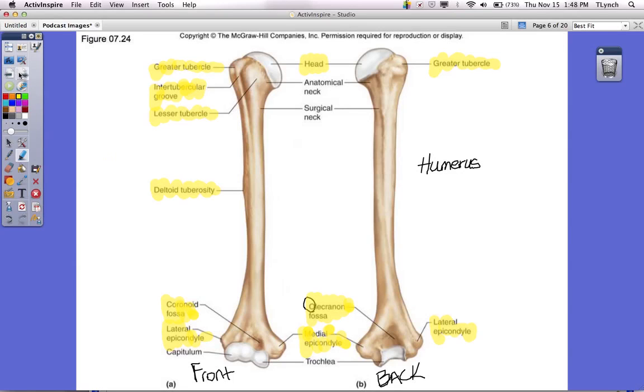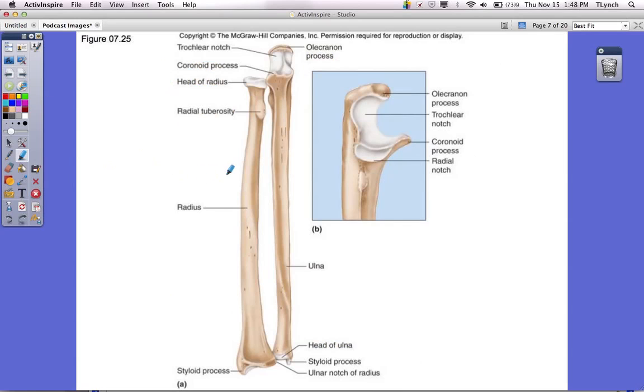Moving on, we're going to go to the radius and the ulna. These are your two forearm bones. This is your ulna, and this is your radius. The radius, you need to know, is on your thumb side. It's always on your thumb side. Your ulna is always on your pinky side. It doesn't change. This area up here of your ulna is basically your elbow.